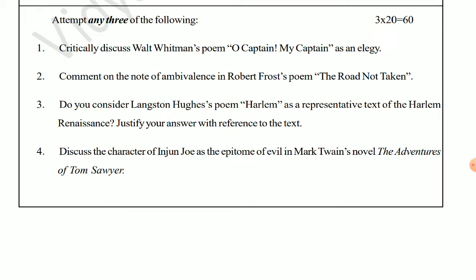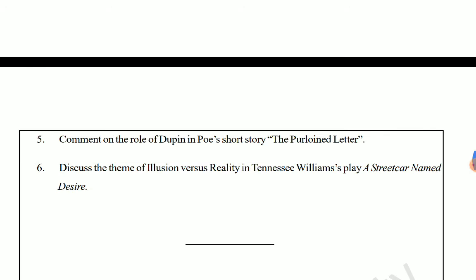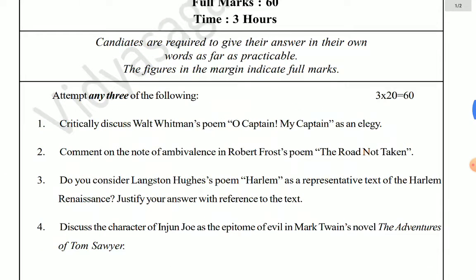Question four: discuss the character of Injun Joe as an epitome of evil in Mark Twain's novel 'The Adventures of Tom Sawyer.' Question five: comment on the role of Dupin in Poe's short story 'The Purloined Letter.' Question six: discuss the theme of illusion versus reality in Tennessee Williams's play 'A Streetcar Named Desire.'